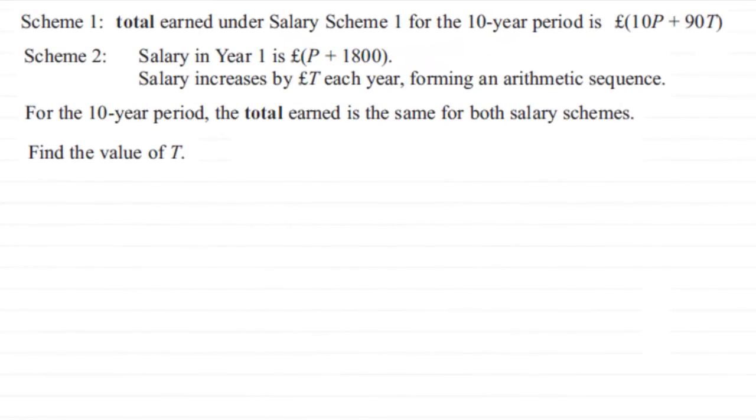In this next part, we're told that Scheme 2 has a salary in year one of P plus 1800 pounds, and it increases by T pounds each year, forming an arithmetic sequence. For the 10-year period, the total earned is the same for both schemes, so we need to find the value of T.